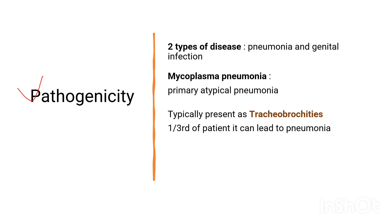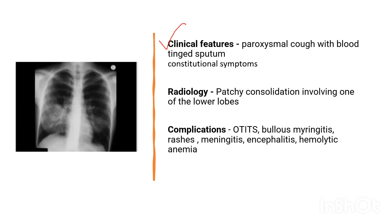Pathogenicity of Mycoplasma pneumoniae: This causes atypical pneumonia. Mycoplasma typically causes tracheobronchitis, and one-third of patients develop pneumonia. Clinical features include constitutional symptoms such as malaise, fatigability, and fever. The characteristic symptom is paroxysmal cough, and patients may also present with blood-tinged sputum.